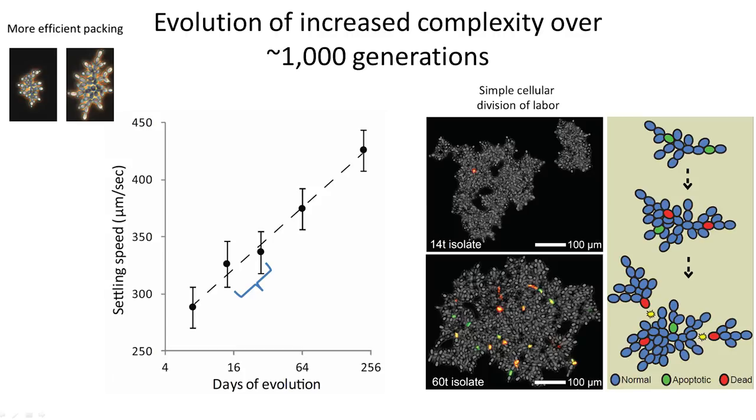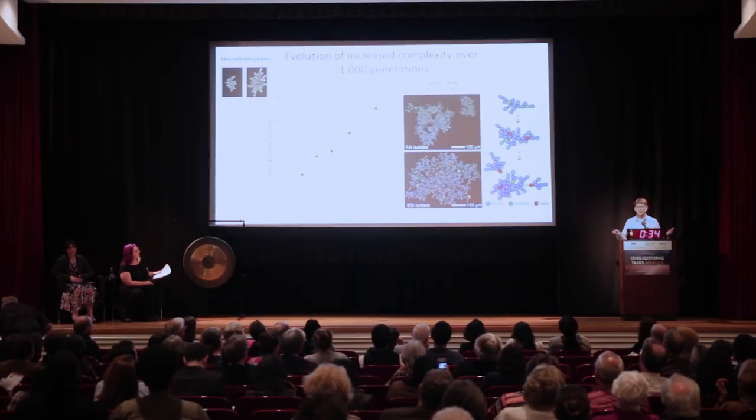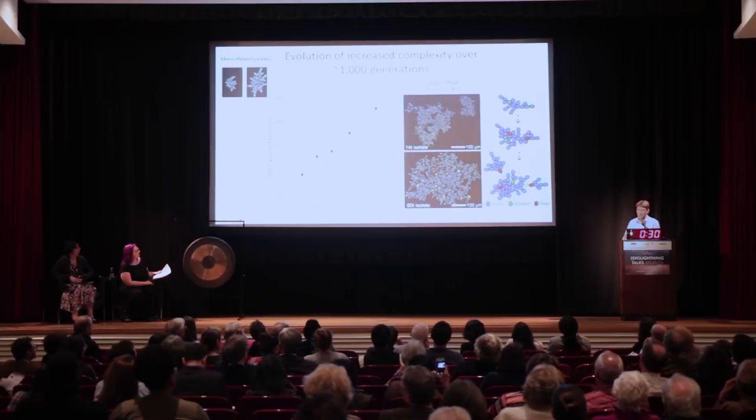Another thing they figured out is how to harness the power of cellular suicide. That might seem counterintuitive — why would we want our cells to commit suicide? But everybody in this room has cells undergoing programmed cell death right now, which is actually really important: it keeps you relatively cancer-free and helps you maintain your organs. Snowflake yeast harness the same behavior, but here when a cell dies, it actually results in the birth of a new baby snowflake. Because when you break one cell in that chain, you pop off a branch, allowing them to control their reproduction.